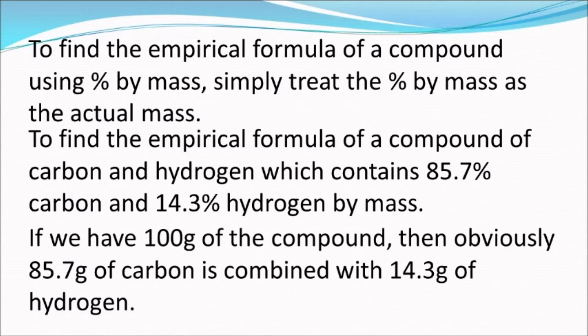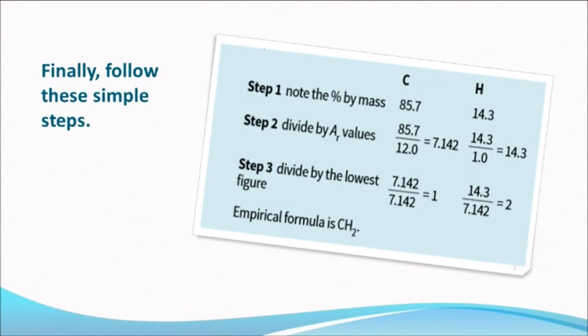First, let's suppose that we have 100 grams of that compound. Then obviously 85.7 grams of carbon reacted with 14.3 grams of hydrogen. Then we follow the four steps we already know.